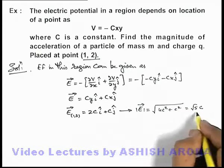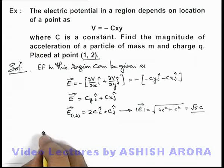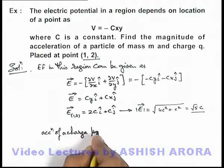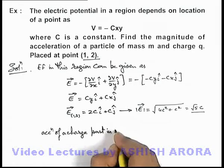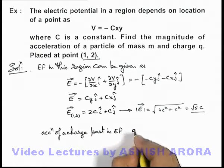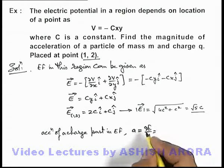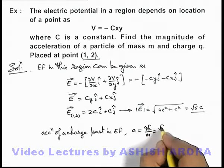If this is the electric field, we can directly write down the acceleration of a charged particle in electric field. This can be written as qE/m, and if we substitute the value of electric field, it will be (√5 Cq)/m.